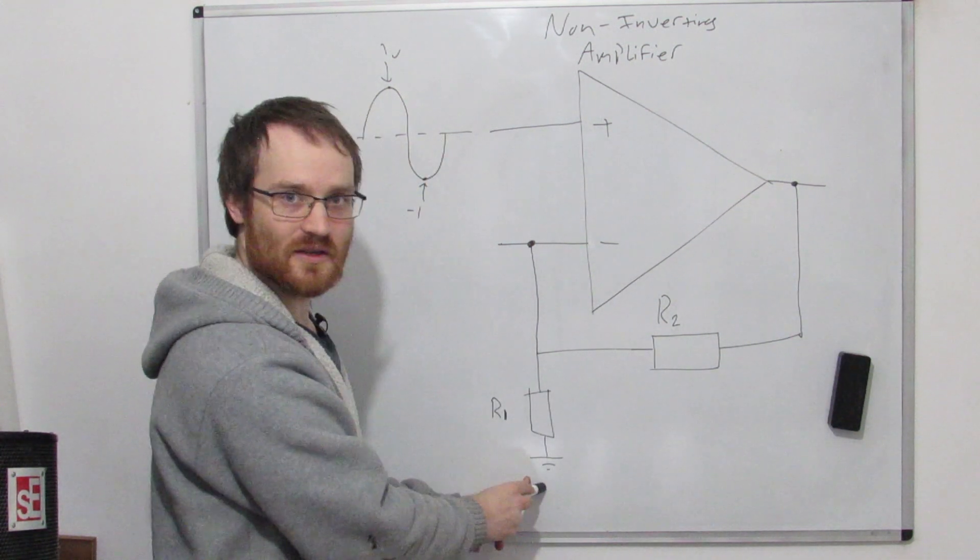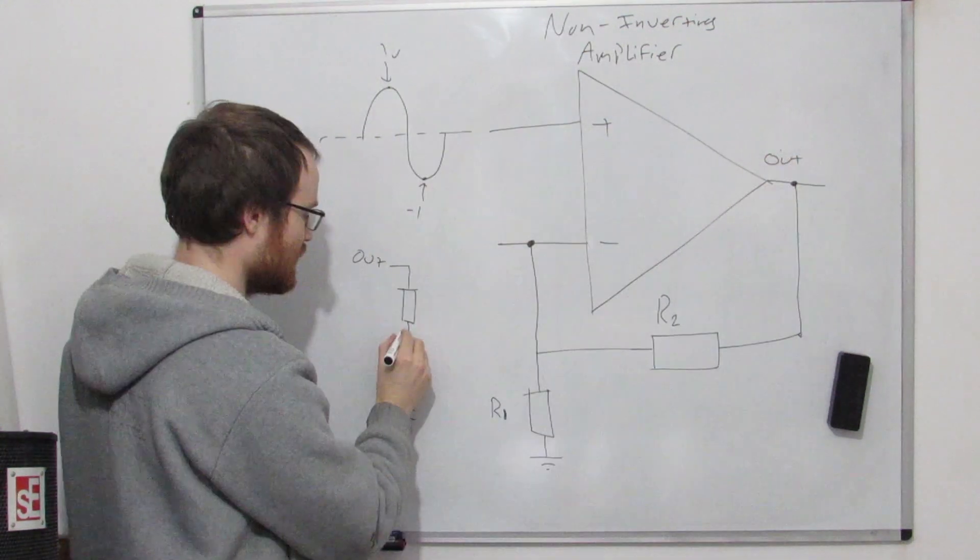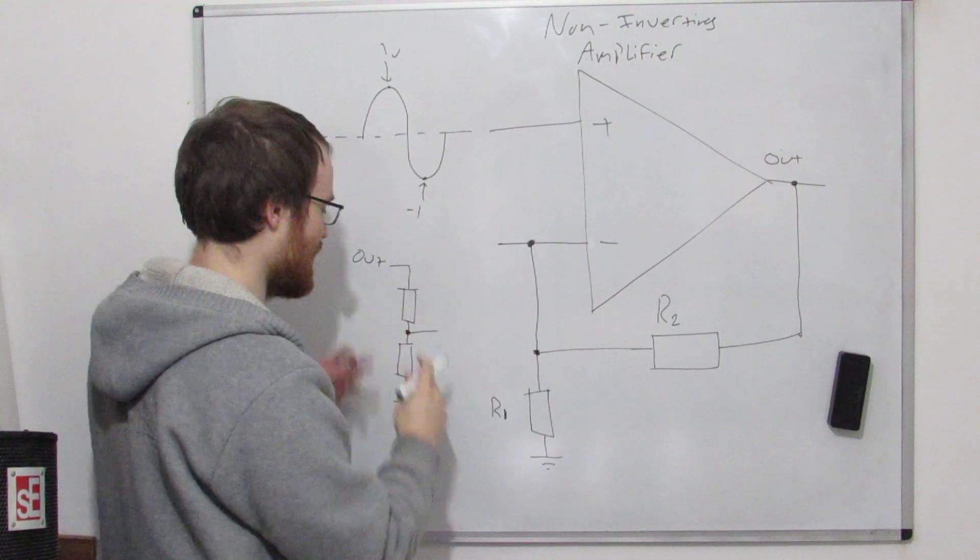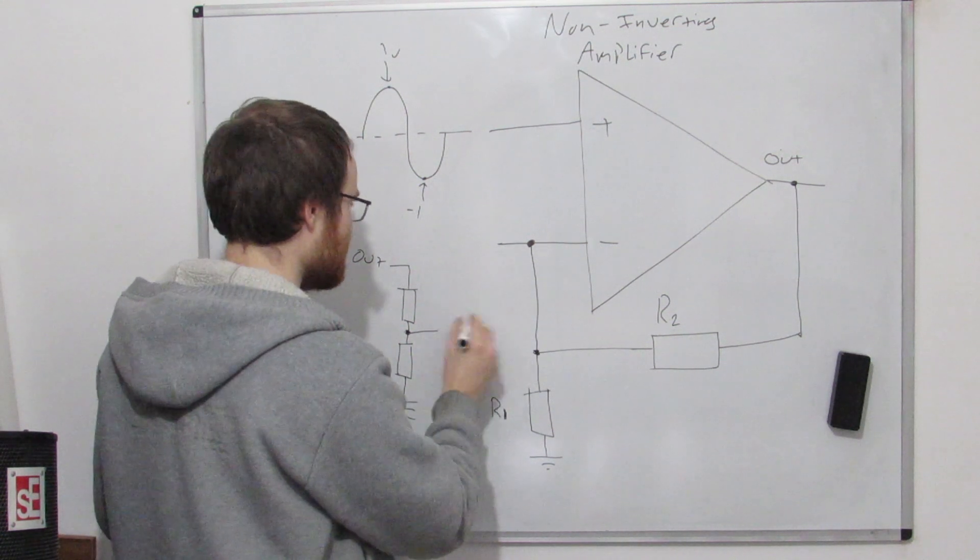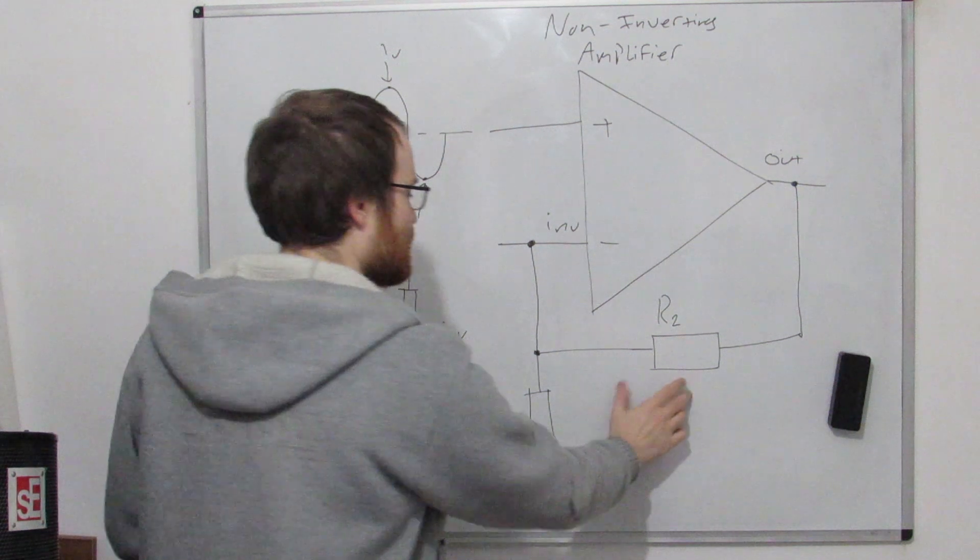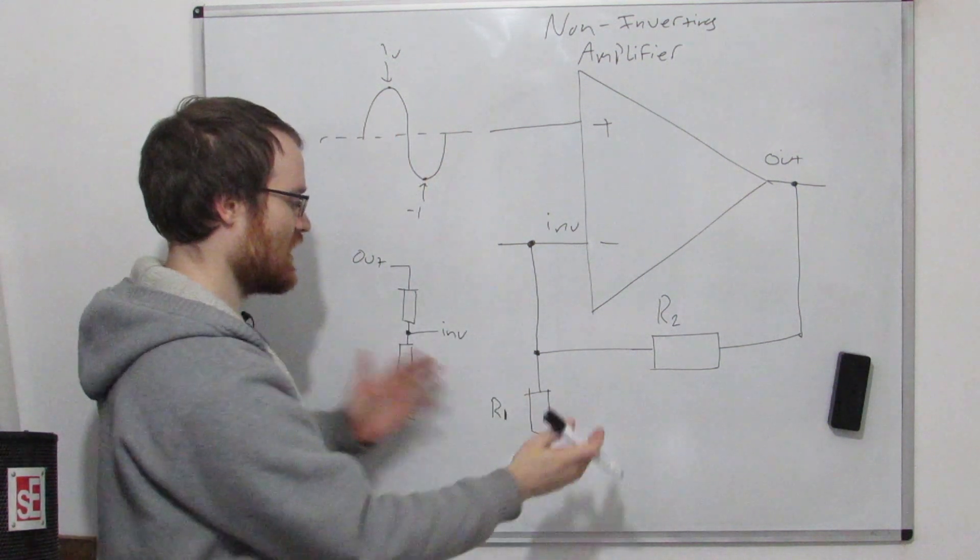Well, we can see down here that what we've essentially done is we've made a voltage divider from the output down to ground. I just put output, that's this point here, and this point here is this point here. So the output of our voltage divider, this goes to our inverting input.